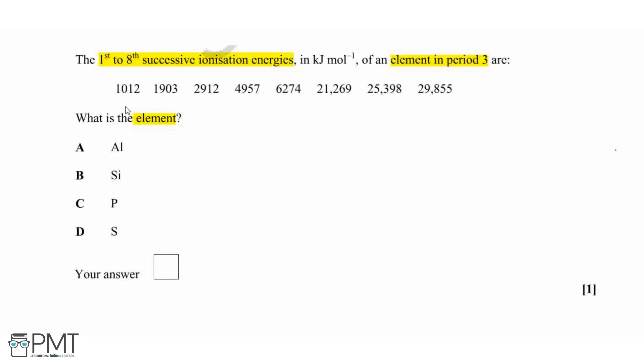Working our way along, we can see a big jump between the values of 6274 to 21,269. So that is the big jump that we can see from these values.